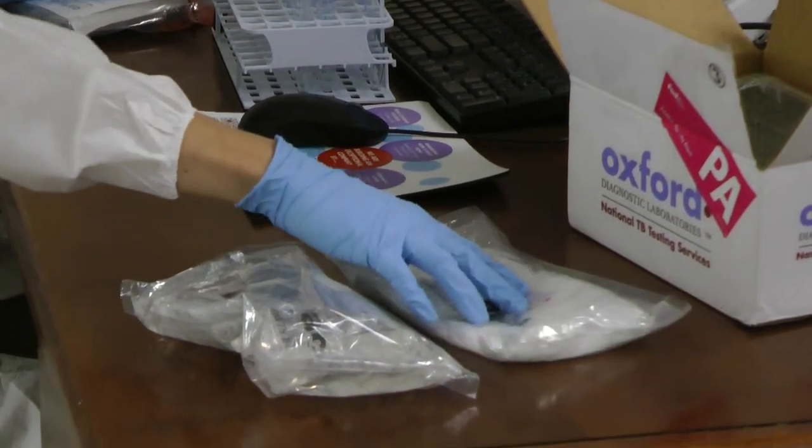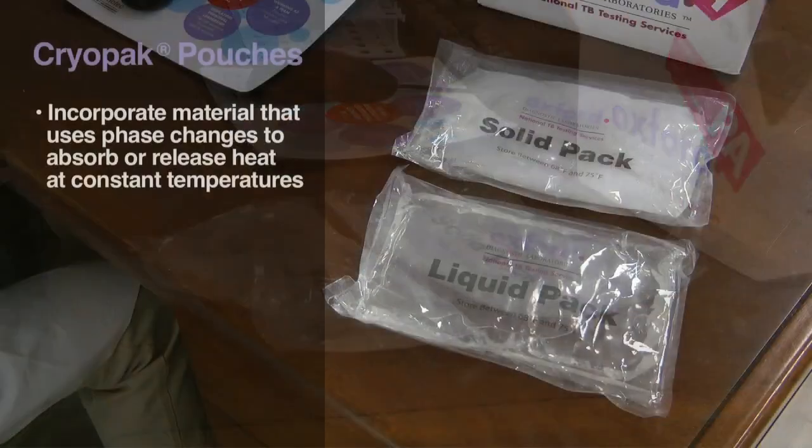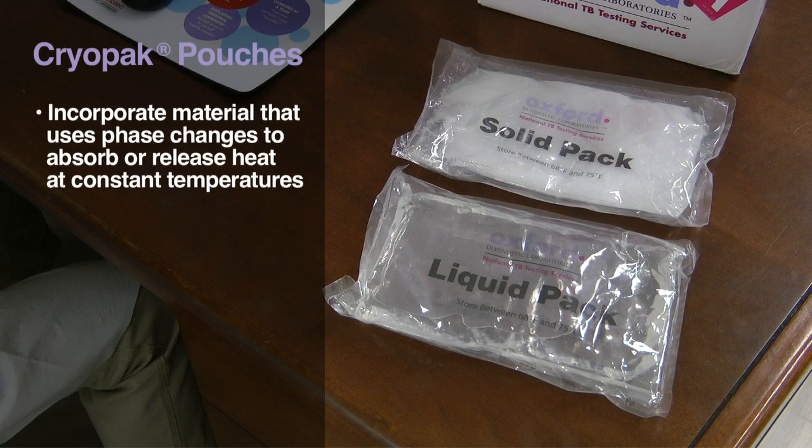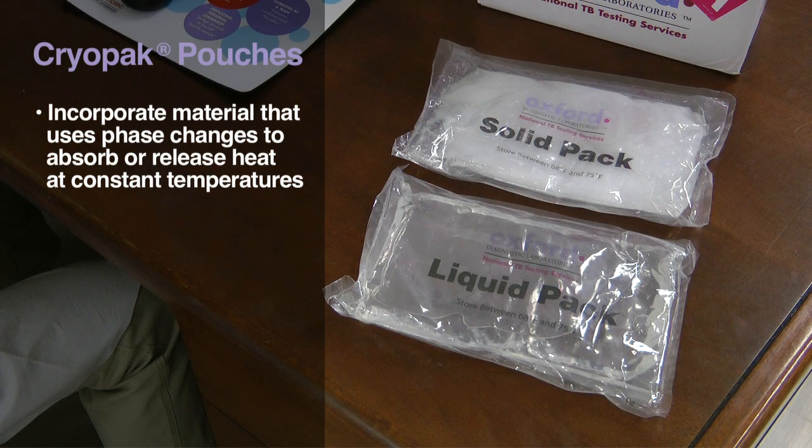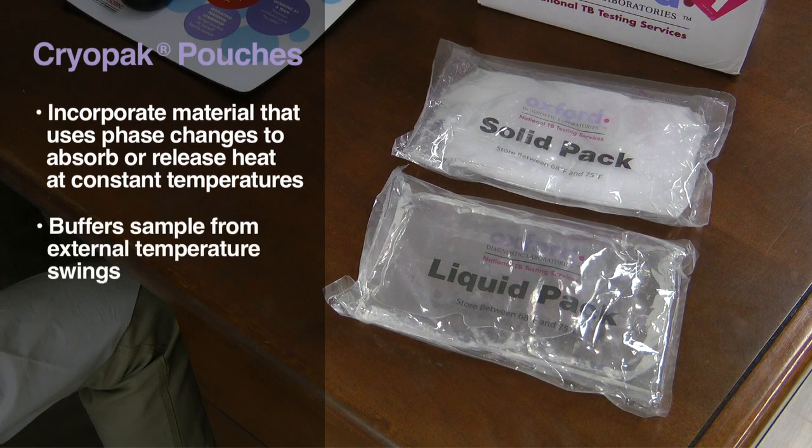The shipping container makes use of cryopack pouches. These pouches incorporate material that uses phase changes, for example melting or freezing, to absorb or release heat at constant temperatures and thereby buffer the sample from external temperature swings during shipping.